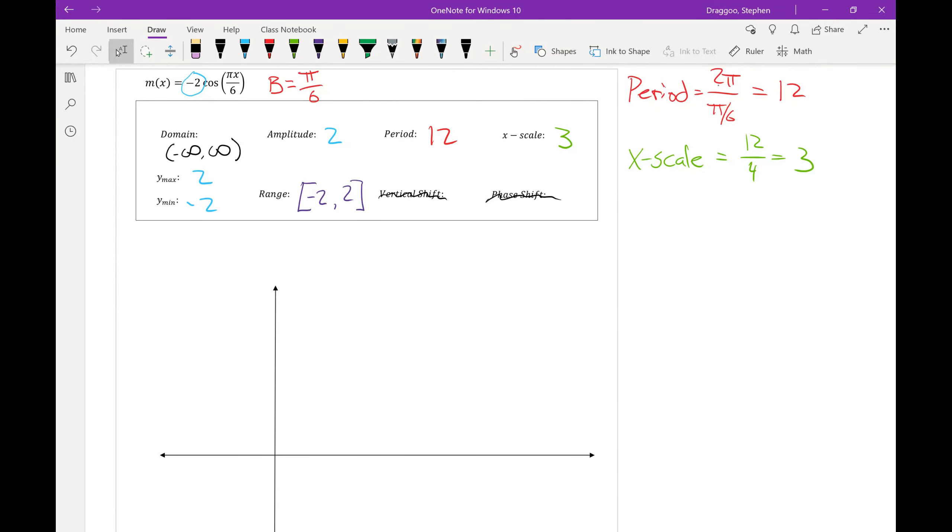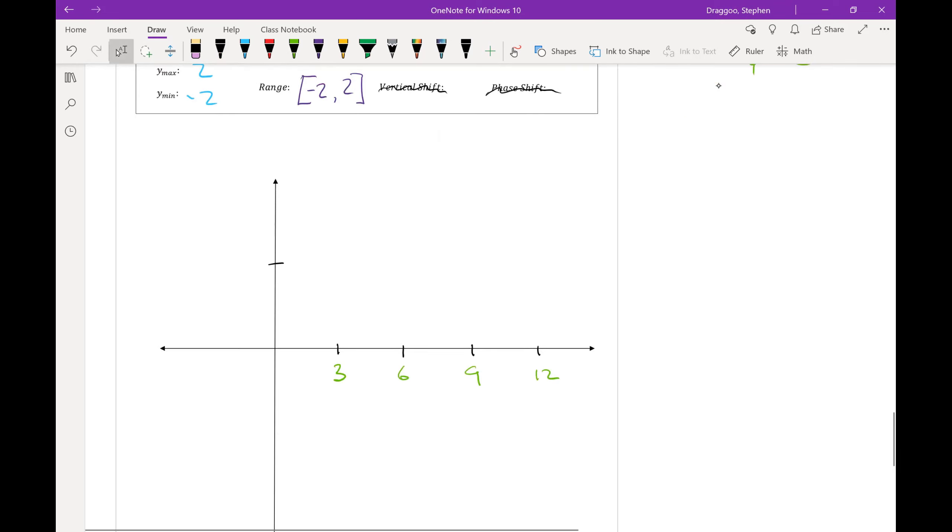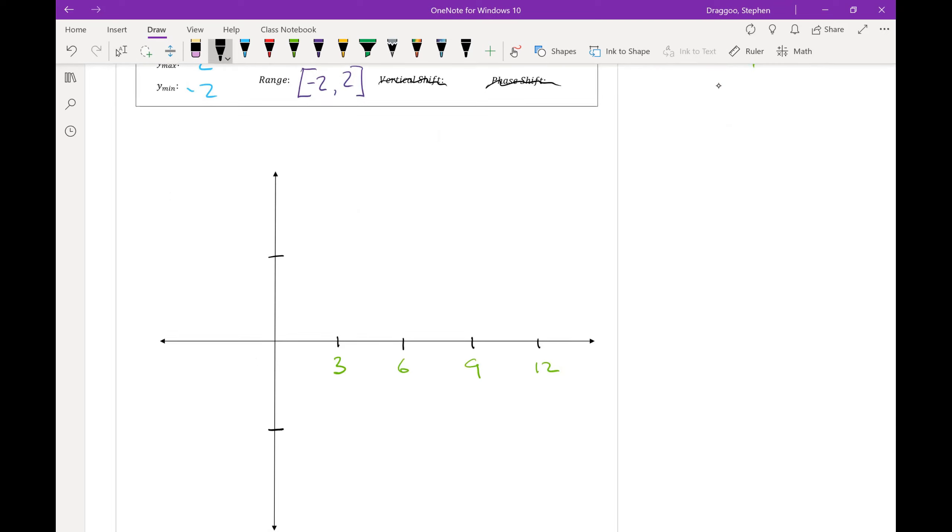Alright, mark off 4 points along the x-axis. And count by my x scale, 3, 6, 9, 12. Mark off my y scales, which should be at 2 and negative 2.